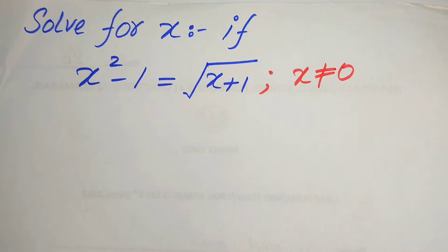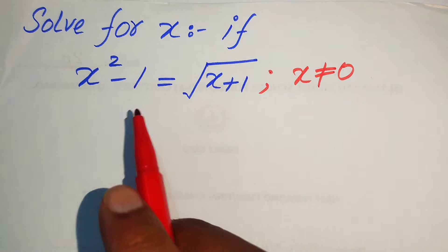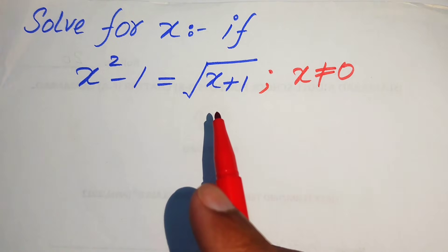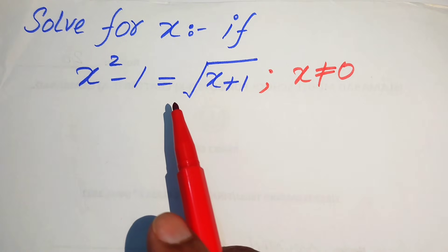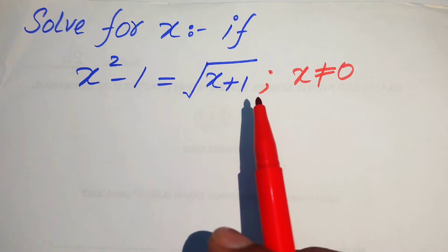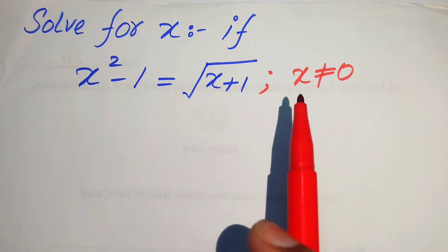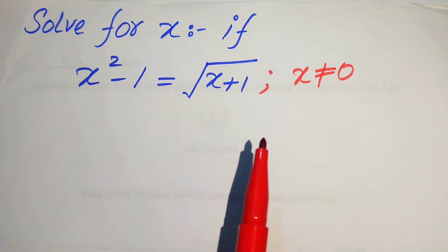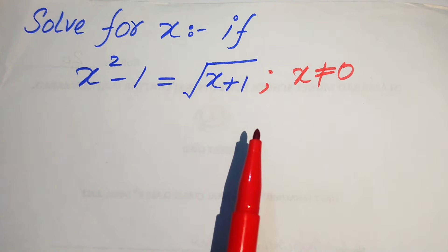Hello everyone, welcome. We solve this algebra problem where x squared minus 1 equals the square root of x plus 1. We solve this problem for the values of x, with one condition: x is not equal to 0, meaning we solve this for the non-zero values of x.